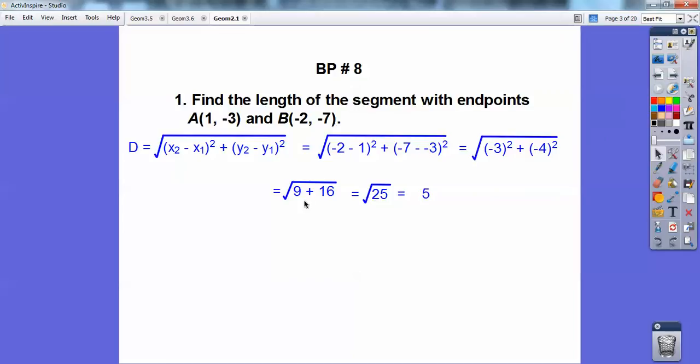Now I square them. -3 squared is 9, -4 squared is 16. You have to add those together first, you guys. 9 plus 16 is 25, and the square root of 25 is 5. So that's the length between these two points right here.